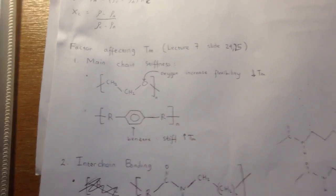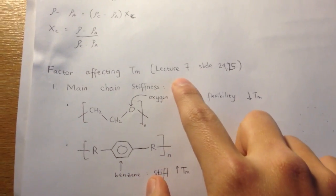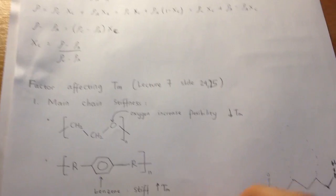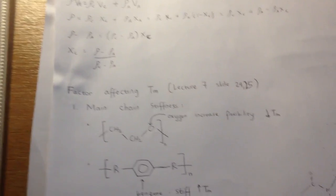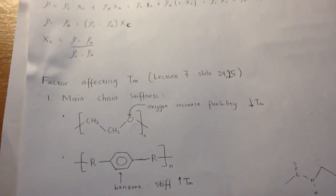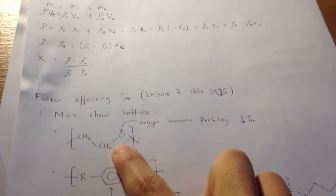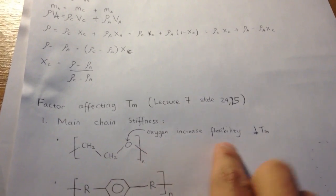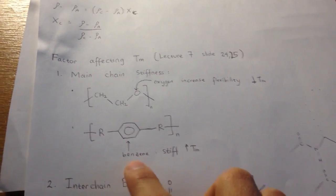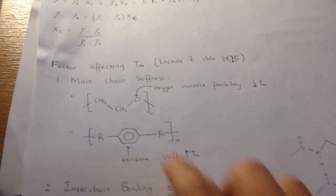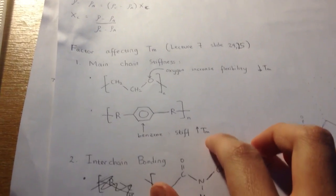And then this is about the TM, lecture 7, slides 24-25. They say first is the main chain stiffness. If it contains O, oxygen, the flexibility will increase and the melting point will decrease. If there is benzene, it is a stiff group, so the melting point will increase.